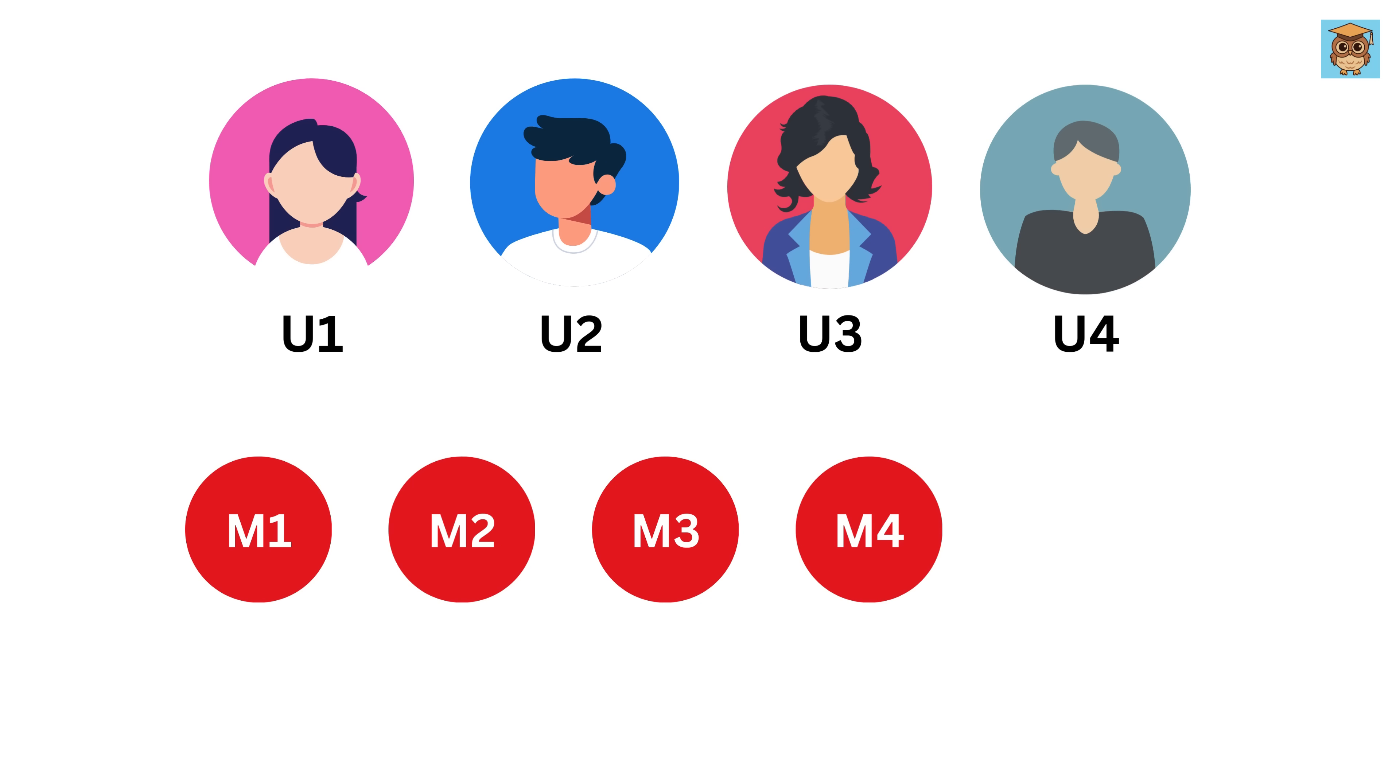Let's imagine four friends and call them User 1, User 2, User 3, and User 4, who've watched and rated five movies. Movie 1, Movie 2, Movie 3, Movie 4, and Movie 5. They rate movies from 1 to 5 stars, and if they haven't seen a movie, we put a zero.